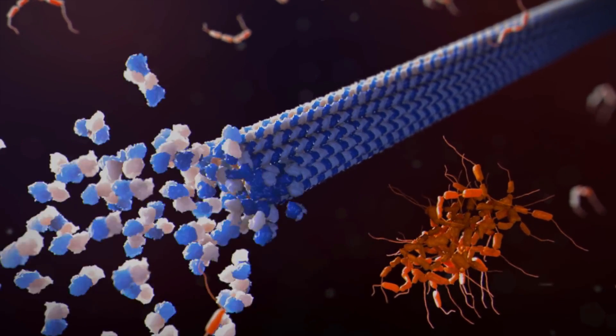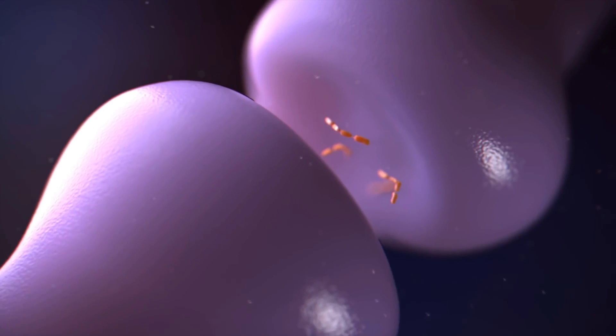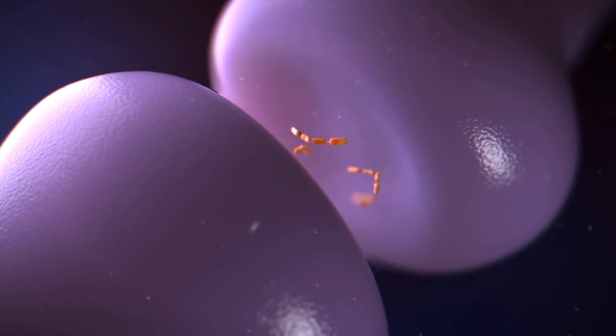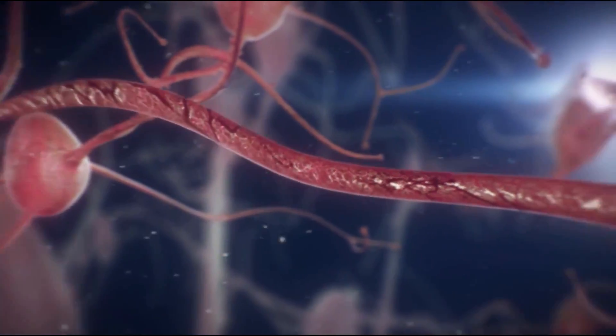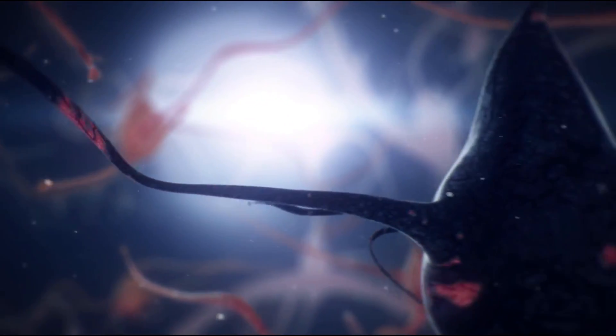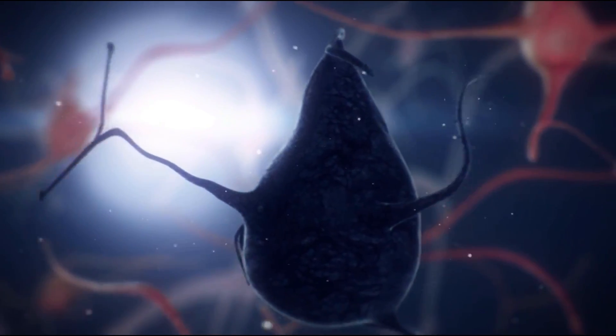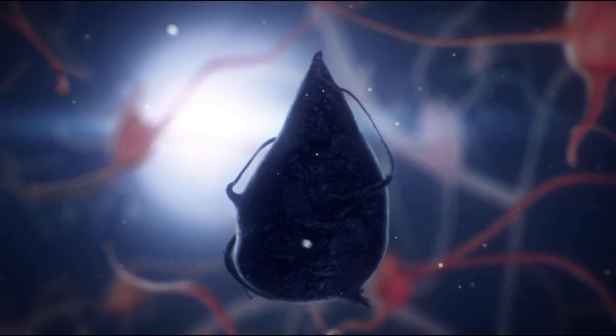However, over time, the tau proteins will disassociate from these neural fibers, which in turn will cause them to fall apart. This will cause the neuron to ultimately retract from other neurons. The dendrites will degrade and retract backwards, wrapping around the neuron. This will lead to the end of that neuron, and with it, any piece of memory you had associated with it.